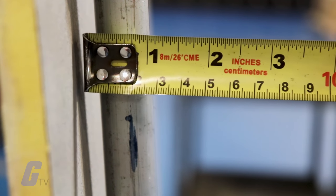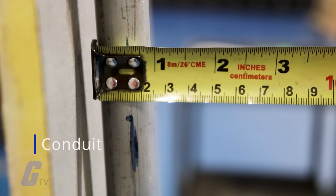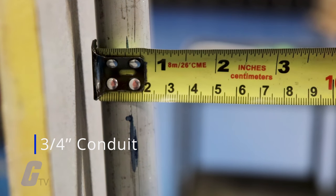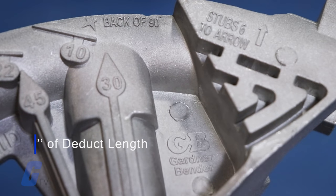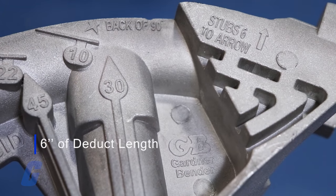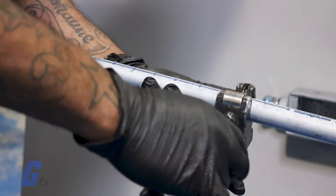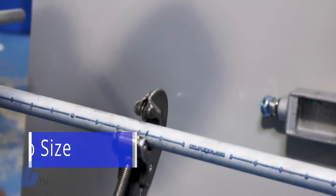This amount varies depending on the diameter of the conduit you are using. For a 90 degree bend, a ½ inch conduit requires 5 inches of deduct length. A ¾ inch conduit requires 6 inches. After determining the amount of deduct length and cutting to the size necessary,